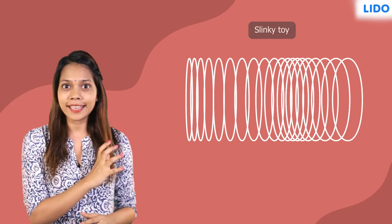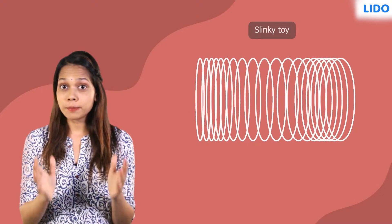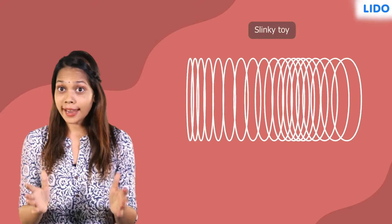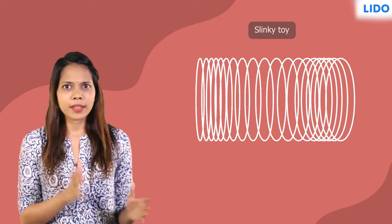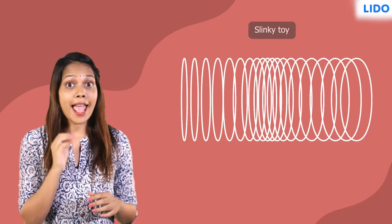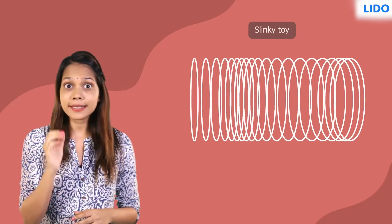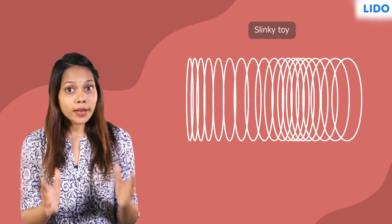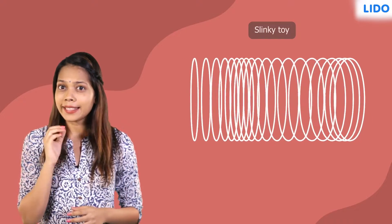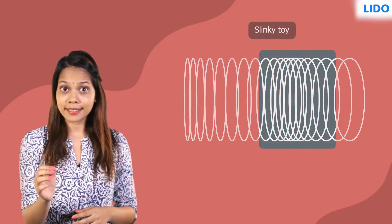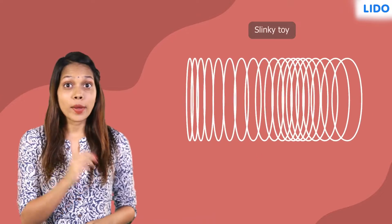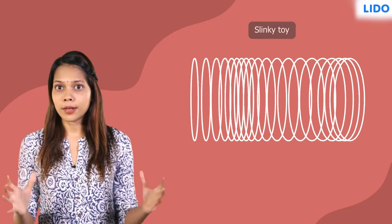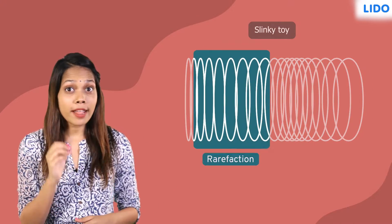We can understand this best with a slinky toy. When the toy is pushed to one end, the coil moves in that direction. Then it hits the next coil and that coil starts to move. While one coil hits the other and they hit the next, a compression is formed. Finally, when they recoil or move apart, we see a rarefaction.